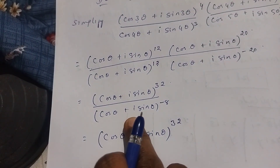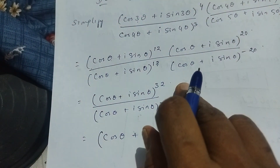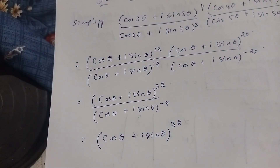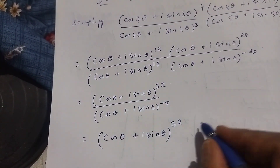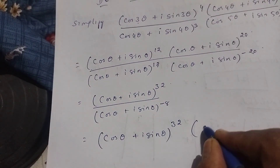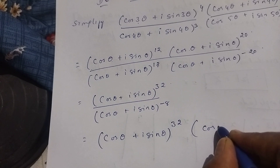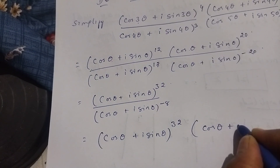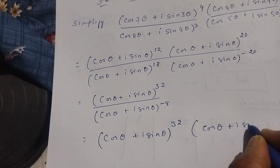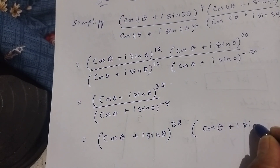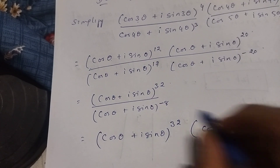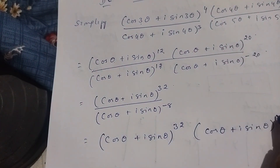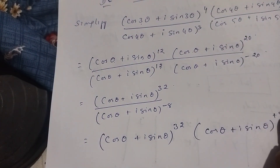If you take the denominator term above, the sign will become plus 8, because when it comes to the numerator it becomes positive if it was minus.